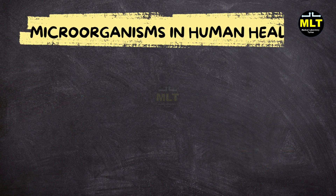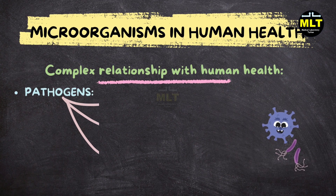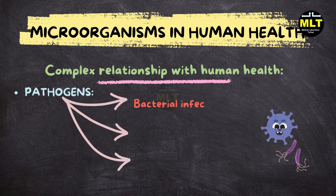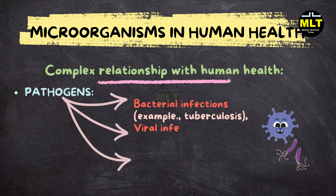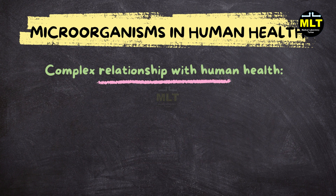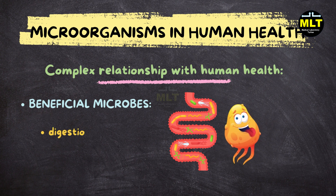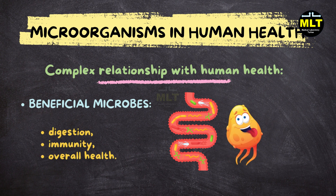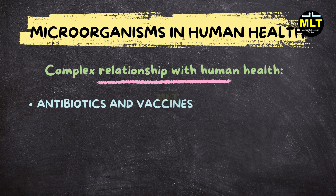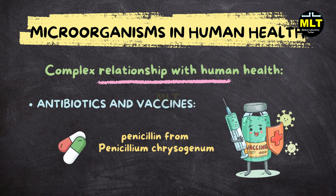Microorganisms in human health. Microorganisms have a complex relationship with human health. Pathogens: certain microorganisms cause diseases, including bacterial infections — example tuberculosis; viral infections — example COVID-19; and fungal infections — example candidiasis. Beneficial microbes: the human microbiome, a diverse community of microorganisms residing in the gut, plays a crucial role in digestion, immunity, and overall health. Antibiotics and vaccines: microorganisms are instrumental in developing antibiotics — example penicillin from Penicillium chrysogenum — and vaccines that help protect against various diseases.